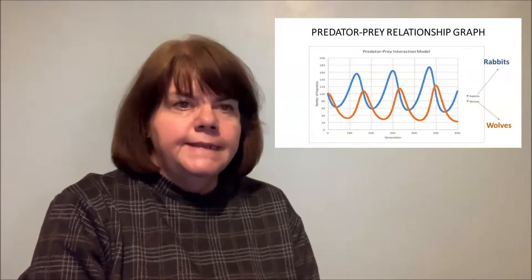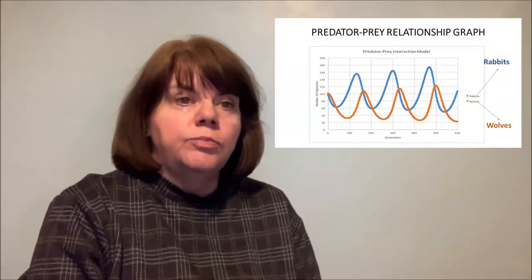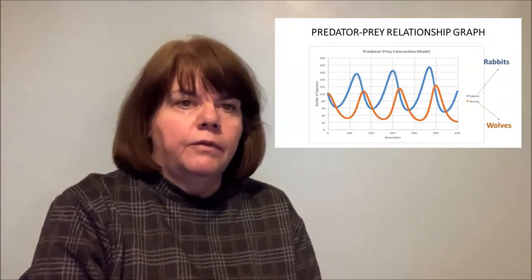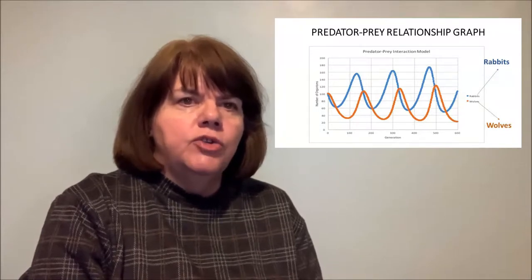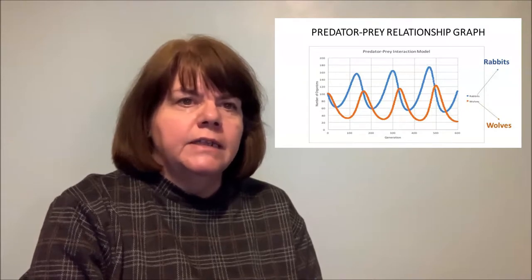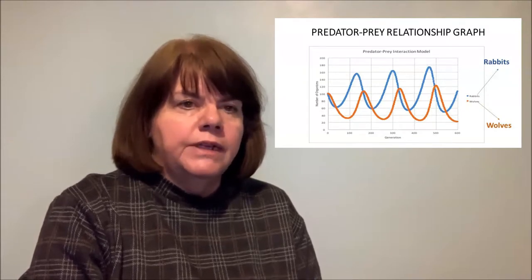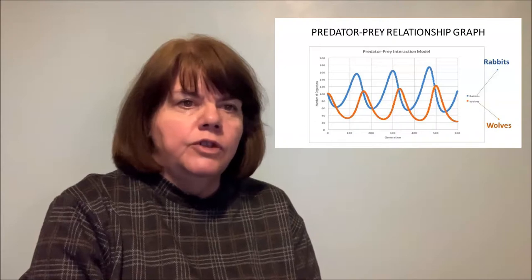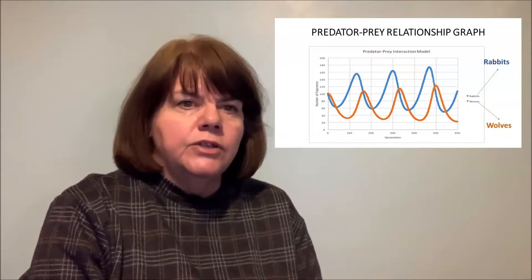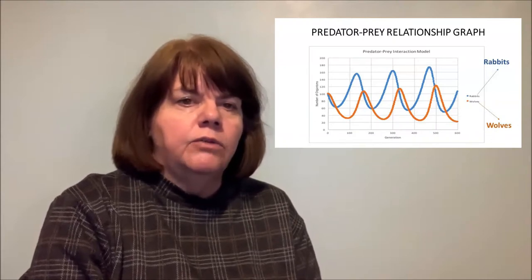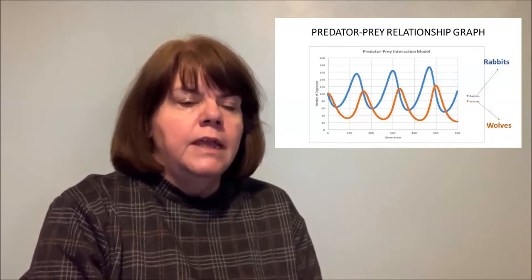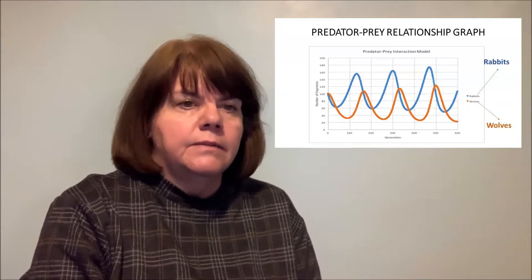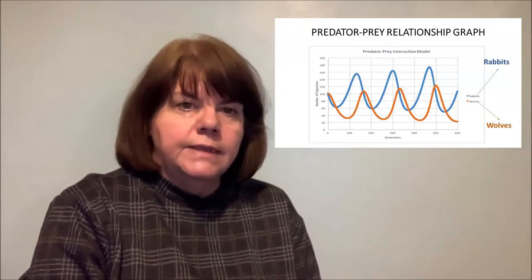This diagram shows a predator-prey relationship graph. The predator-prey relationship is used to describe how two different species interact in the wild. The predator will hunt the prey for food. Their populations will fluctuate over time in a related way. An example, as shown here, is wolves hunting rabbits. If the rabbit population increases, it will support larger numbers of predators.